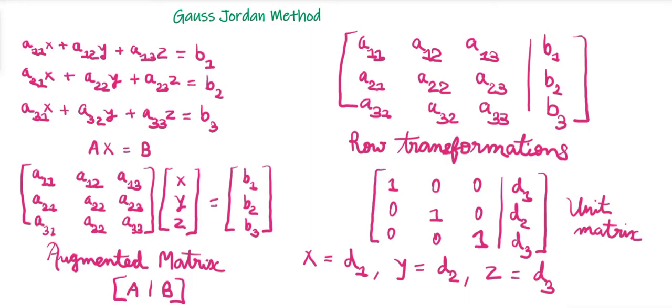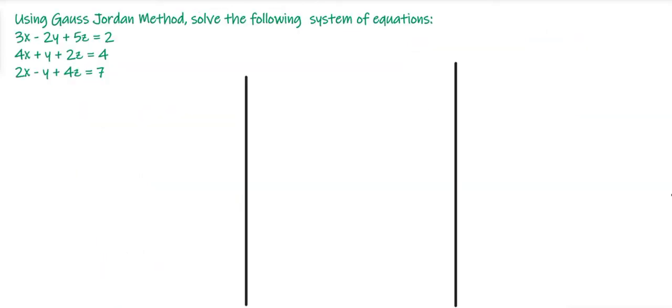So this is the working rule of the Gauss-Jordan method. Now we will solve an example. Using the Gauss-Jordan method, solve the following system of equations: 3x − 2y + 5z = 2, 4x + y + 2z = 4, 2x − y + 4z = 7.